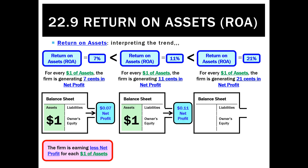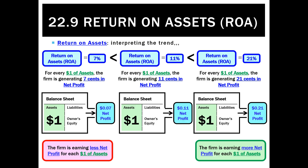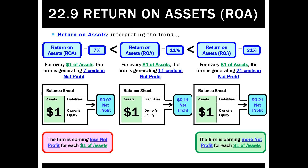If the ROA went up to 21%, that's a good trend. For every dollar of assets we had this year, we've managed to earn a net profit of 21 cents. So we're more profitable, and we're earning more net profit for every dollar of assets.